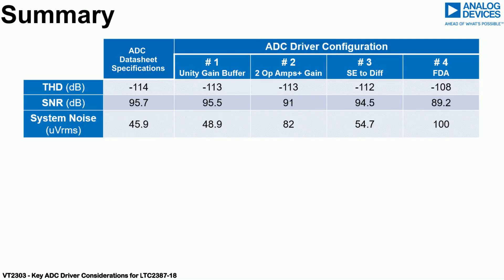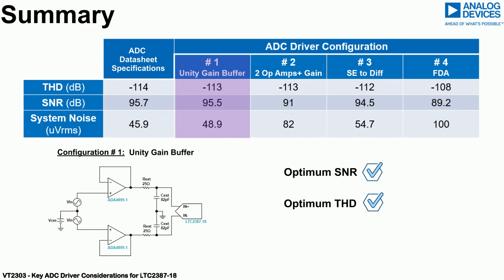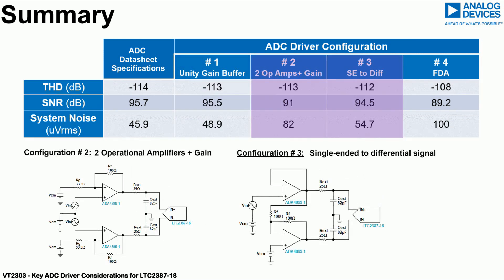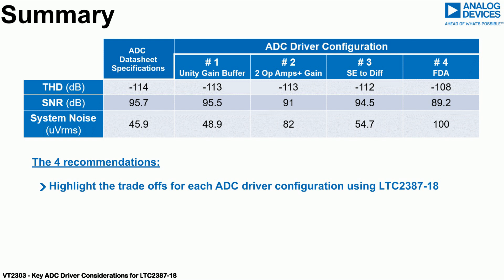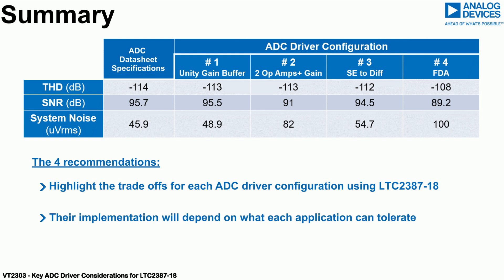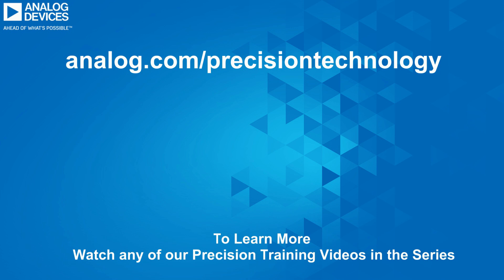In summary, optimum SNR and THD performance for the LTC 2387-18 is achieved with a unity gain buffer ADC driver circuit. Adding gain or single-ended to differential conversion impacts SNR and THD. Lower power consumption is achieved with a fully differential amplifier, but at the expense of degraded SNR and THD performance. The four recommendations highlight the trade-offs for each configuration, and implementation will depend on what the application can tolerate. To learn more, please watch the next in our Precision Signal Chain Platforms video training series.